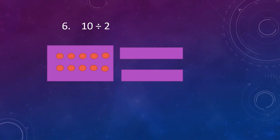Our sixth example is 10 divided by 2. Here 10 dots are given and we have to divide them equally between two boxes. So, put a dot and keep it in the first box, put the second dot and keep it in the second box. Now we have 8 dots. Again, divide these dots equally in two boxes — take the first dot and keep it in the first box, take another and keep it in the second box. Now we are left with 6 dots to divide. Again, put a dot in each box.